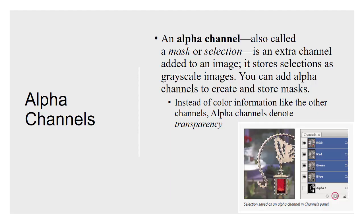Alpha channels are a kind of channel that doesn't have any color information — they just store selection information as a grayscale image. So if we make a mask — a quick mask, a selection, a marquee — and then add it as a layer mask, we'll see in the channels panel a new mask at the bottom labeled Alpha 1, 2, and so on. An alpha channel is an extra channel added to an image that stores your selection information as a grayscale picture. You can create alpha channels, duplicate them, save them, copy them, and modify them just like quick mask. Unlike quick mask mode, which disappears when you press Q again, alpha channels stick around.